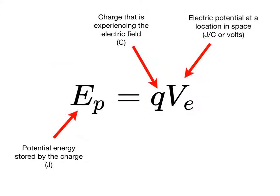Let me remind you again that electrical potential and electrical potential energy are different things. To calculate the electrical potential energy of a charge at some location in space, we multiply the charge by the electrical potential at that location.